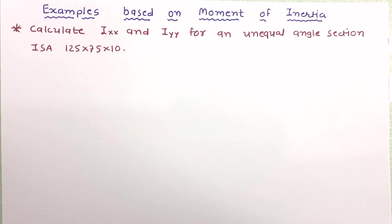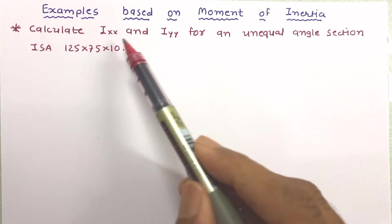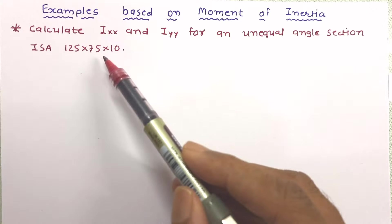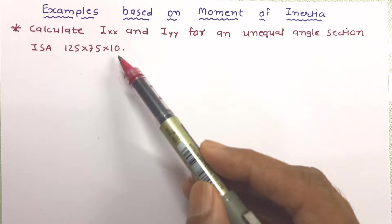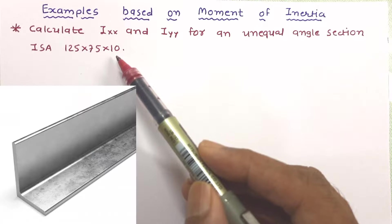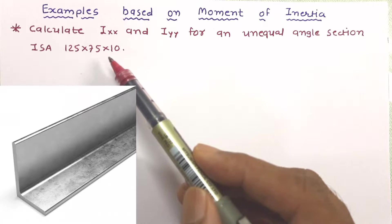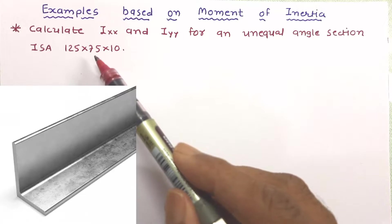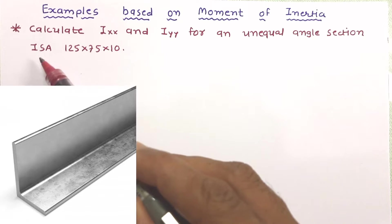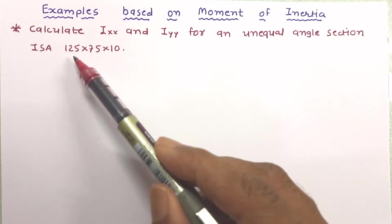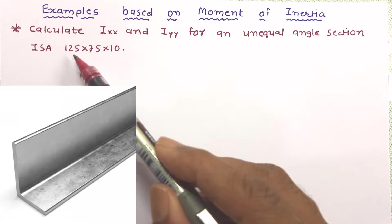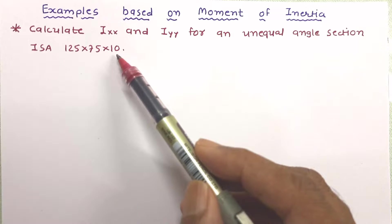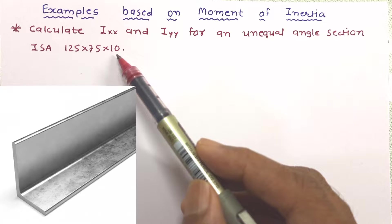The problem given is: calculate Ixx and Iyy for an unequal angle section ISA 125×75×10. Here, ISA stands for Indian Standard Angle. ISA 125×75×10 means the longer leg dimension is 125 mm, the shorter leg dimension is 75 mm, and the thickness of the section is 10 mm. Let us draw the figure first.